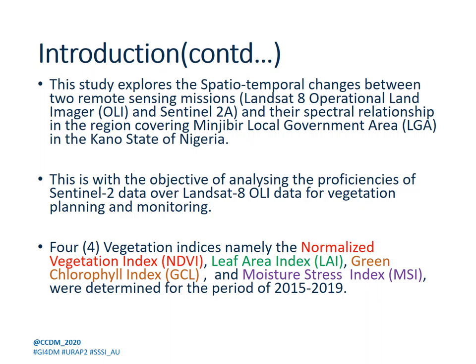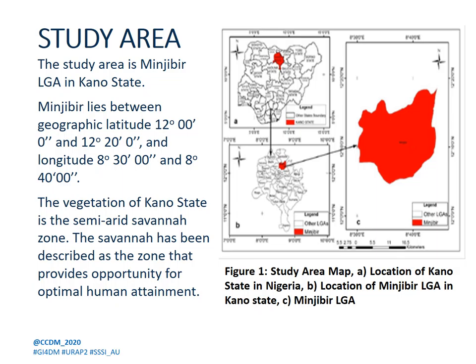In this study, we explored the spatial-temporal changes between two remote sensing sensors — the Landsat-8 Operational Land Imager and Sentinel-2A — over Minjibil Local Government Area in Kano State. Four vegetative indices were considered: the Normalized Difference Vegetation Index (NDVI), Leaf Area Index (LAI), Green Chlorophyll Index (GCI), and Moisture Index, for the period 2015–2019.